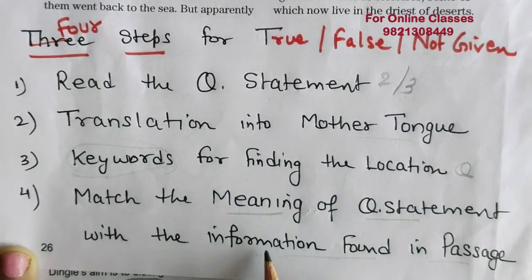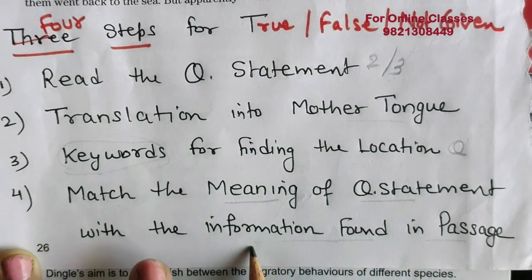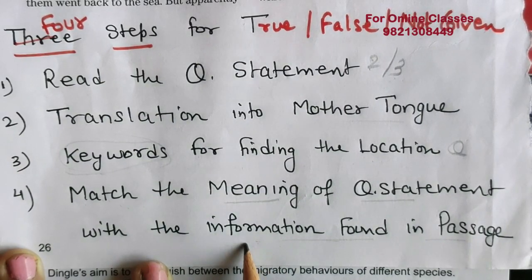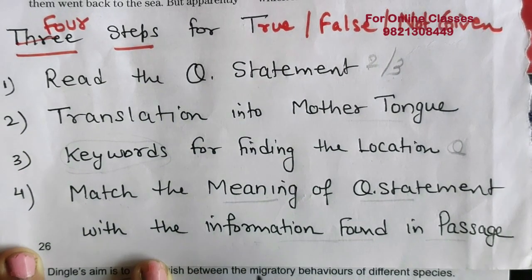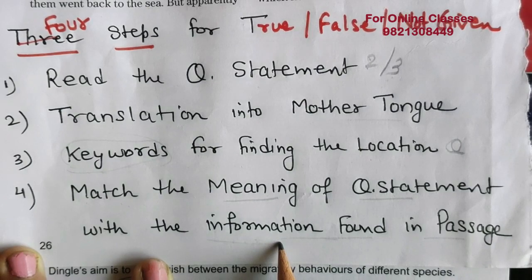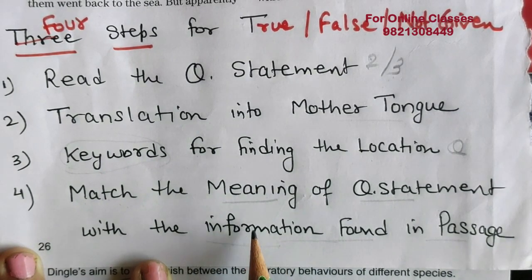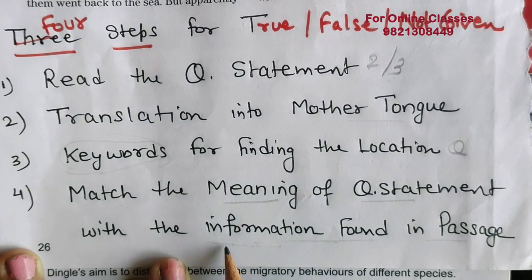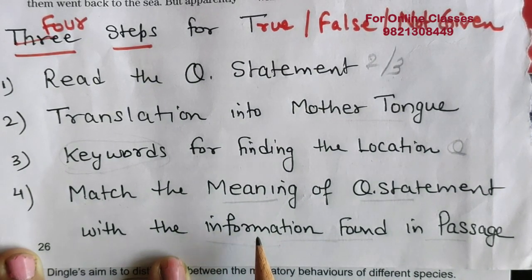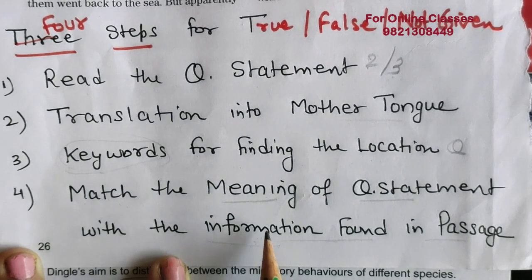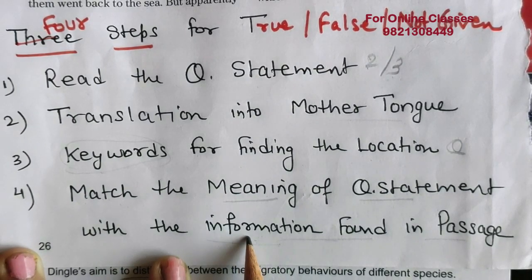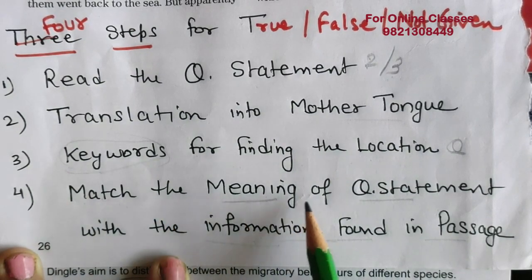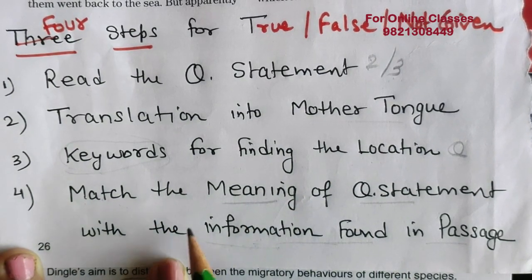In the passage, we will find the same type of information in two or three sentences — not just one sentence — because this is IELTS reading, where everything is in paraphrase language. Finally, before reaching your decision whether it is True, False, or Not Given, always match the meaning of the question statement with the information found in the reading passage.